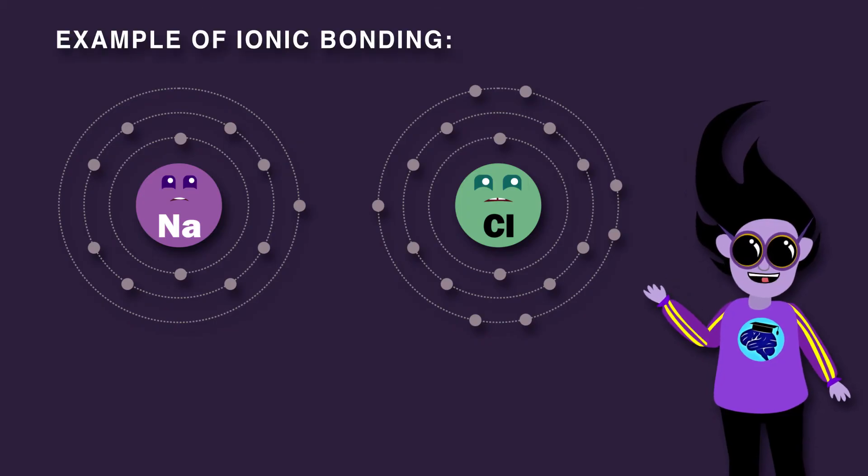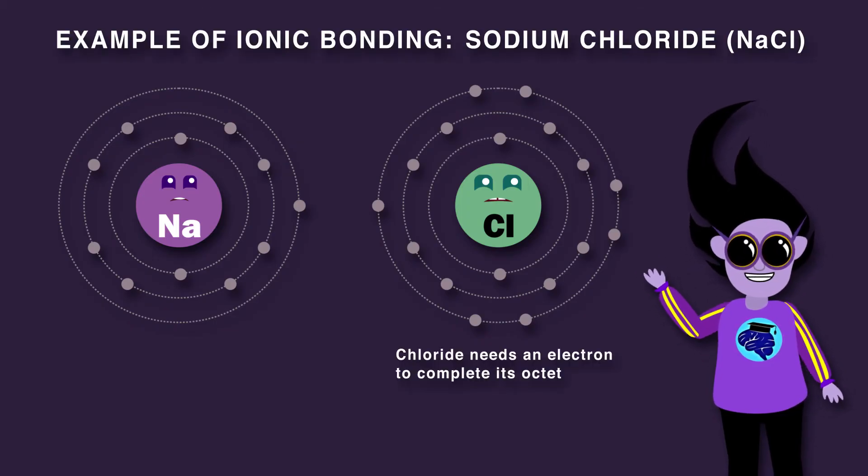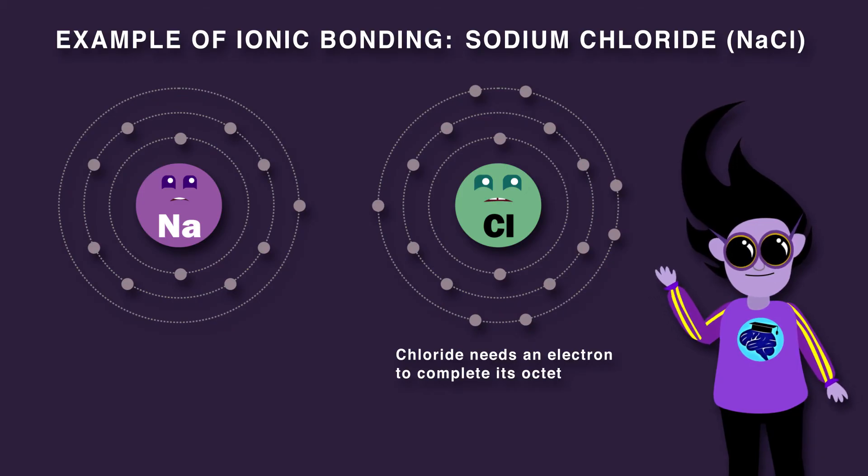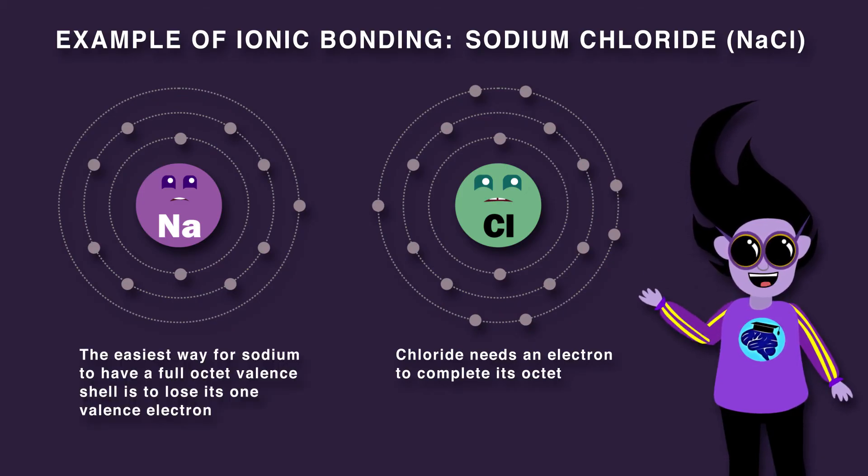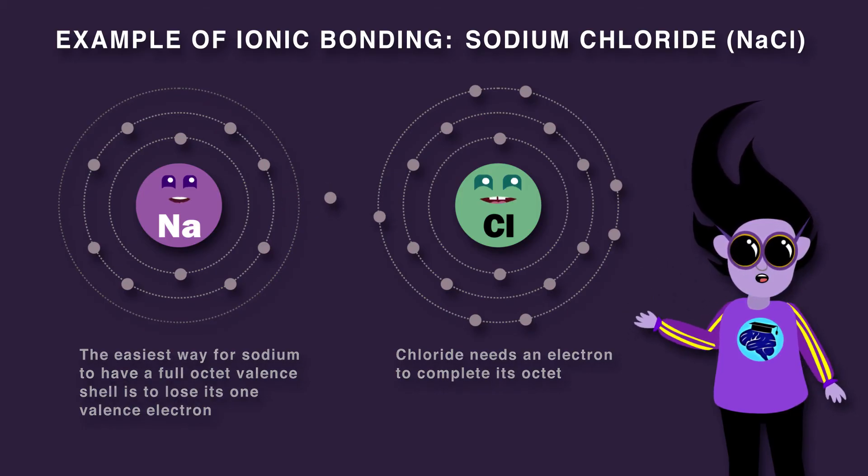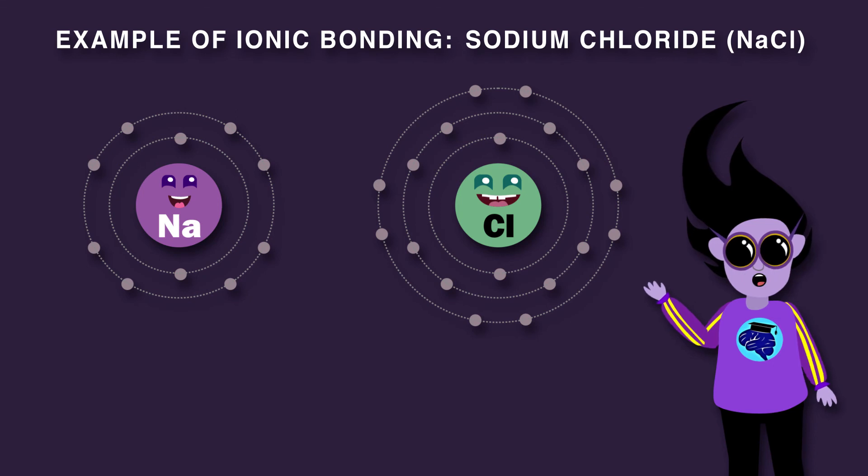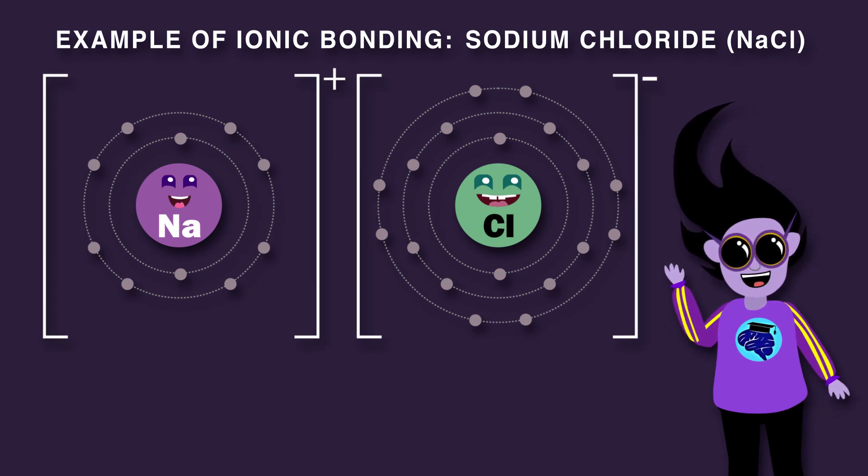As an example, let's take sodium chloride. Chloride needs an electron to complete its octet. The easiest way for sodium to have a full octet valence shell is to lose its one valence electron, so sodium donates an electron to chloride. As a result, sodium is now a cation and chloride is now an anion.